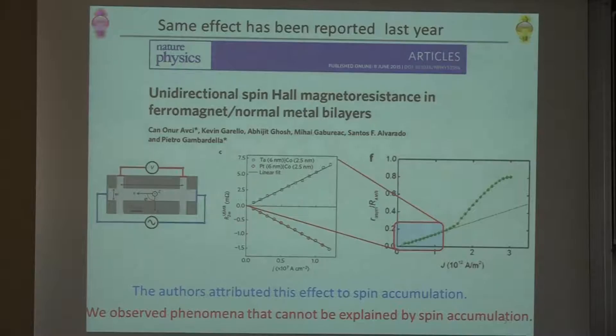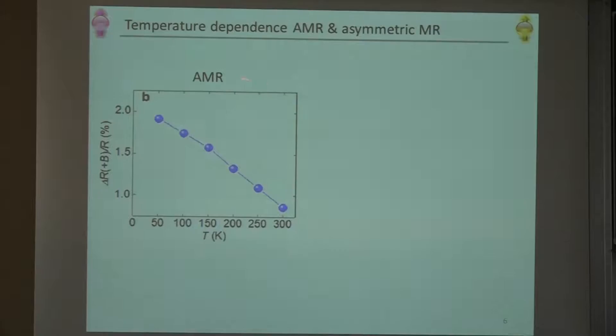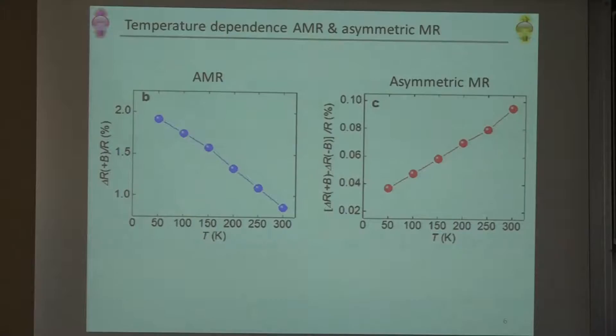First one is the temperature dependence. Here I show the temperature dependence of unidirectional magnetoresistance, and it shows the decrease of amplitude with increase in temperature. I think this is a typical temperature dependence of any magnetoresistance effects, including giant magnetoresistance and tunneling magnetoresistance. Most magnetoresistance effects show decrease with increasing temperature. But however, if you measure the new asymmetric MR, then you see the increase of the effects with increasing temperature.